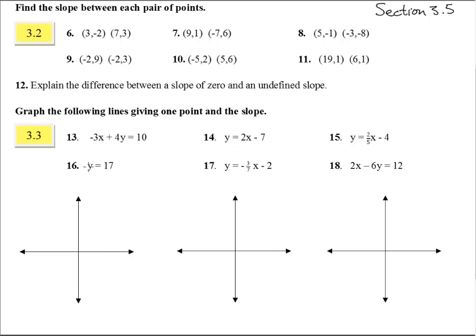Number 16, y equals 17 is one of those special ones. You can imagine that there's 0x there, so slope is 0, and the y intercept is 0 comma 17. So we go up here to where y is 17, and the slope is 0, meaning it is straight across. Or you could have done it the old-fashioned way, 0 comma 17, 1 comma 17, 2 comma 17, as long as the y stays at 17 and x can do whatever it wants.